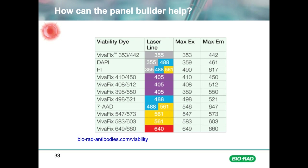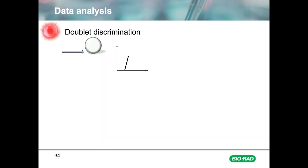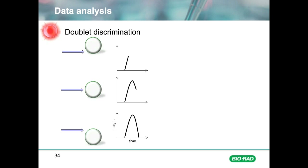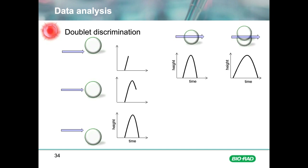Another step in data analysis is doublet discrimination, which ensures you count single cells and exclude doublets. Doublet exclusion is performed by plotting the height or width against the area for forward or side scatter. As a particle moves through the laser, a signal is generated that increases and decreases over time. Doublets will have double the area and width values of single cells, whilst the height is roughly the same. Therefore, disproportions between height, width, and area can be used to identify doublets, which can be excluded to ensure only single cells are analysed.